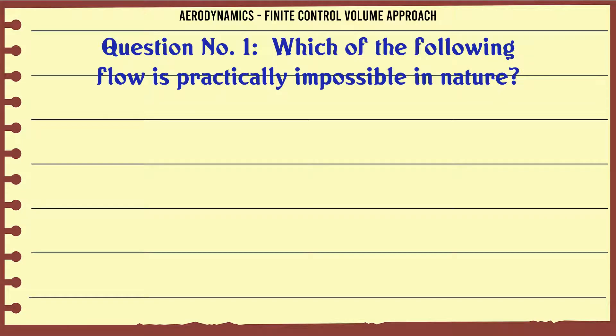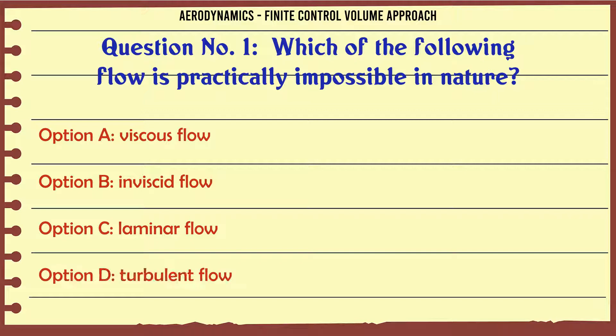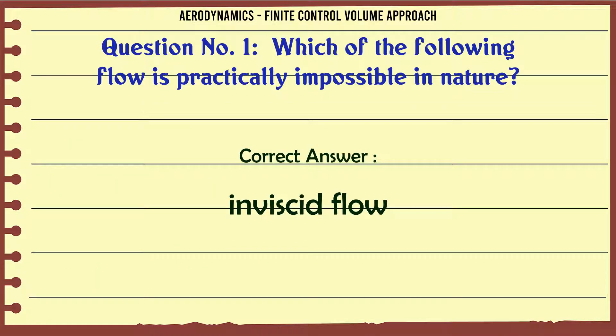Which of the following flow is practically impossible in nature? a. Viscous flow. b. Inviscid flow. c. Laminar flow. d. Turbulent flow. The correct answer is inviscid flow.